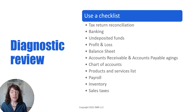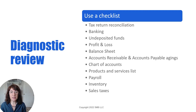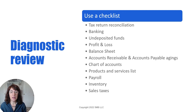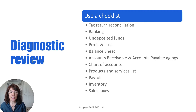For example, the things you need to be looking at include whether the balance sheet on the books reconciles to a balance sheet on the tax return if there is one, banking and credit card accounts, undeposited funds, profit and loss accounts, balance sheet accounts, accounts receivable and accounts payable aging, a chart of accounts, products and services list, and areas such as payroll, inventory, and sales taxes if they're tracking that in QuickBooks Online.